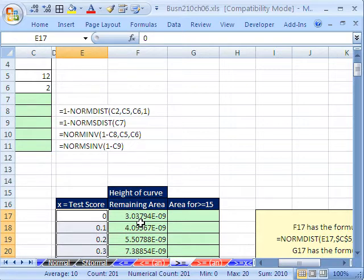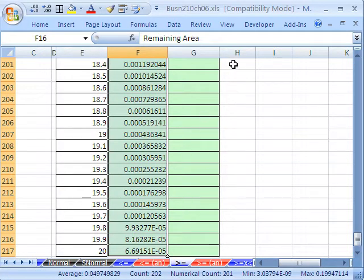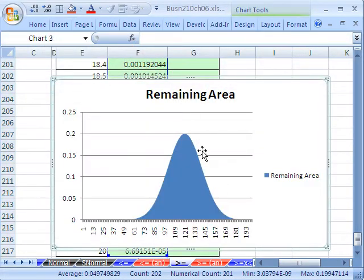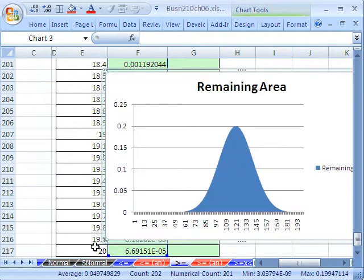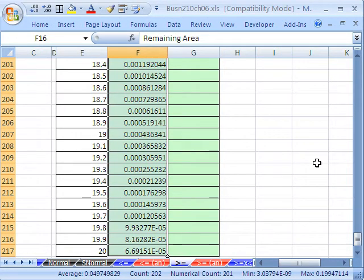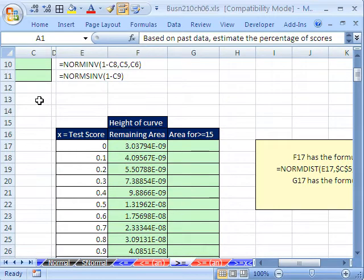Now the mean is going to be this 12, and I'm going to lock it with my F4 key. The standard deviation is going to be this 2 locked with my F4 key. Cumulative is going to be 0. That is for the height. That's how we calculate all the, create the chart. Control-Enter. And then I'm going to double-click and send it down.